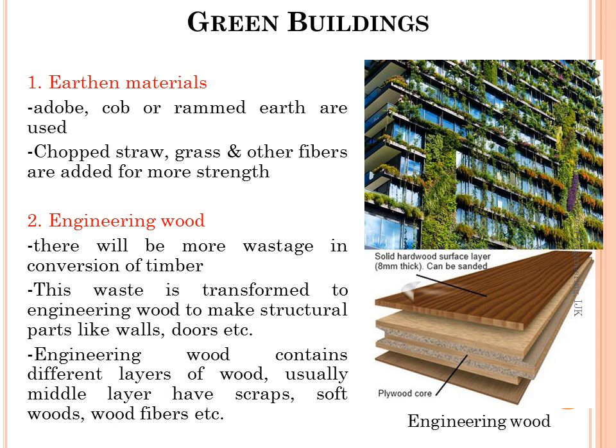The second is engineered wood. Wood is one of the most famous building materials in the world, but in the process of converting raw timber to wood boards and planks, considerable quantities of wood are wasted. This wastage can be used to make structural parts like walls and doors. This is called engineered wood. Engineered wood contains different layers — usually the middle layers are made of wood scraps, softwoods, and wood fibers.